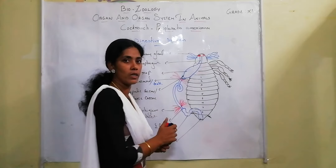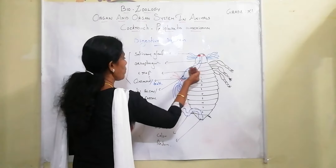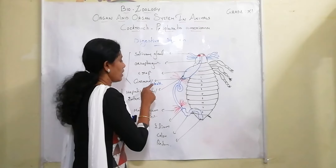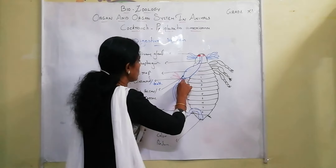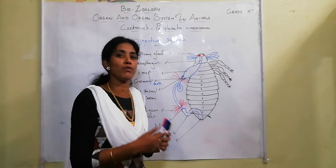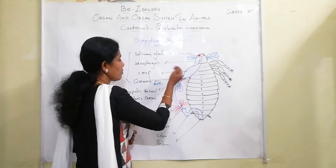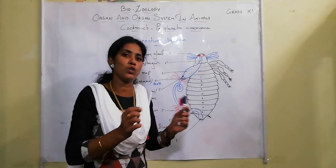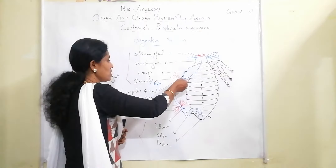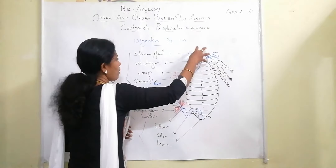The crop leads to the gizzard. The innermost region of the gizzard consists of chitinous plates considered as teeth, responsible for grinding food. After the gizzard, there are hepatic caeca — six finger-like blind tubular projections. That completes the foregut region: mouth, esophagus, crop, and gizzard.